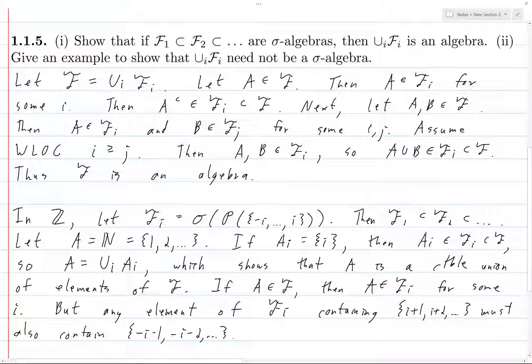And, these negative integers are not contained in A. So, A cannot possibly be in Fi for any i. So, therefore, A cannot be in F. Thus, A is not in F,